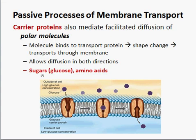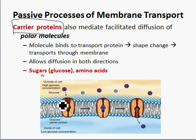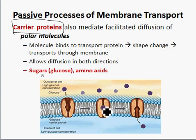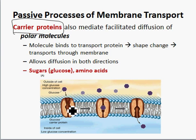Another type of facilitated diffusion requires carrier proteins. Carrier proteins are transmembrane proteins, and in this case glucose is transported across. When glucose binds to the carrier protein, it actually changes shape — opening towards the outside of the cell, then when glucose binds, it opens towards the inside of the cell. Glucose is brought in through diffusion with no energy required. There are carrier proteins that allow sugars and also amino acids to pass in.